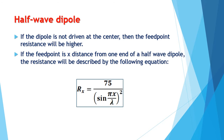If the dipole is not driven at the center, then the feed point resistance will be higher. If the feed point is x distance from one end of a half-wave dipole, the resistance will be described by the following equation: R sub x is equal to 75 over sine squared of pi x over lambda.